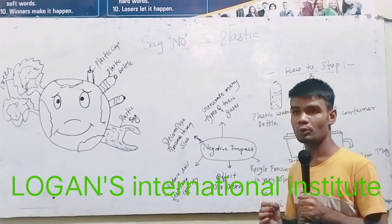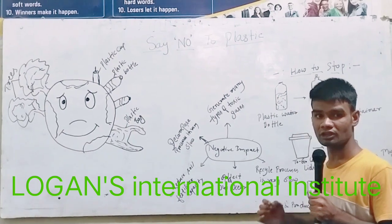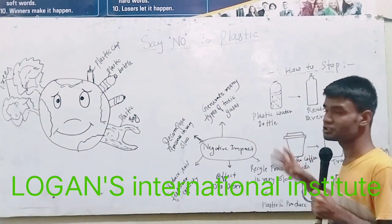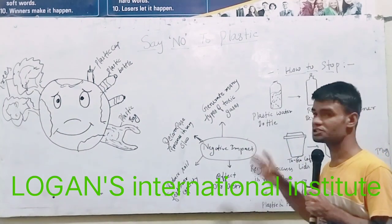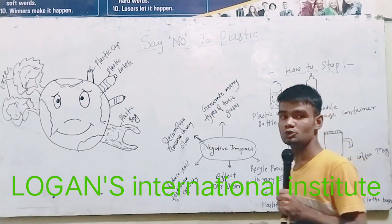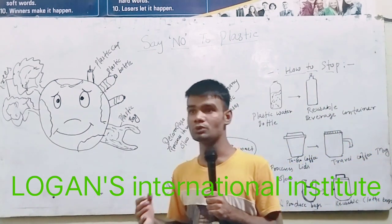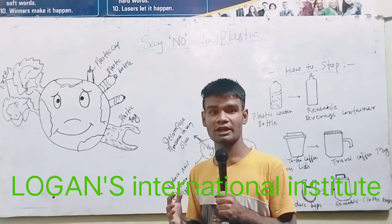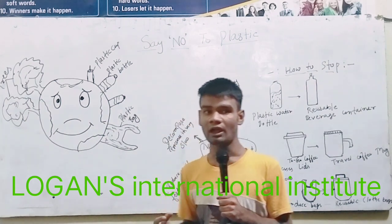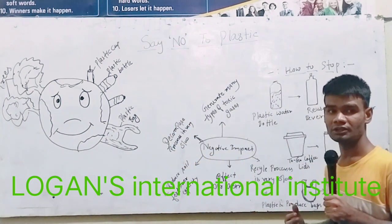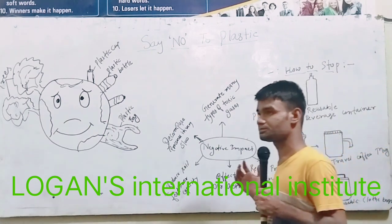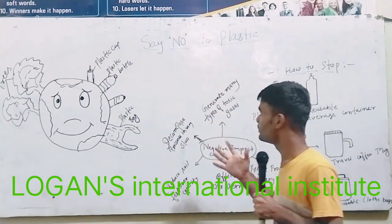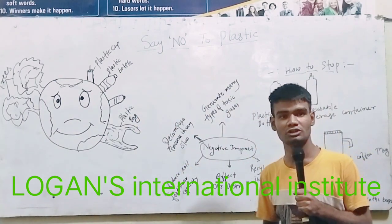According to data, every year 9.46 million tons of plastic are generated in our country. This is the moral value of this picture — we should not use single-use plastic. We can use cloth bags in place of plastic bags. Plastic is very dangerous for our environment and causes many diseases. That is the main moral value of this picture. Thank you for listening.